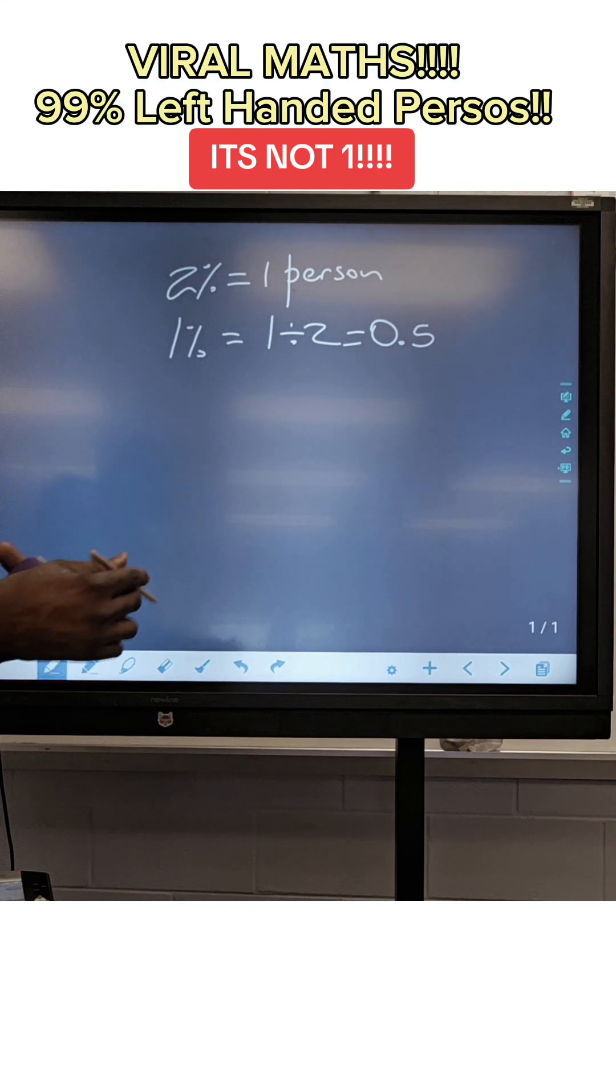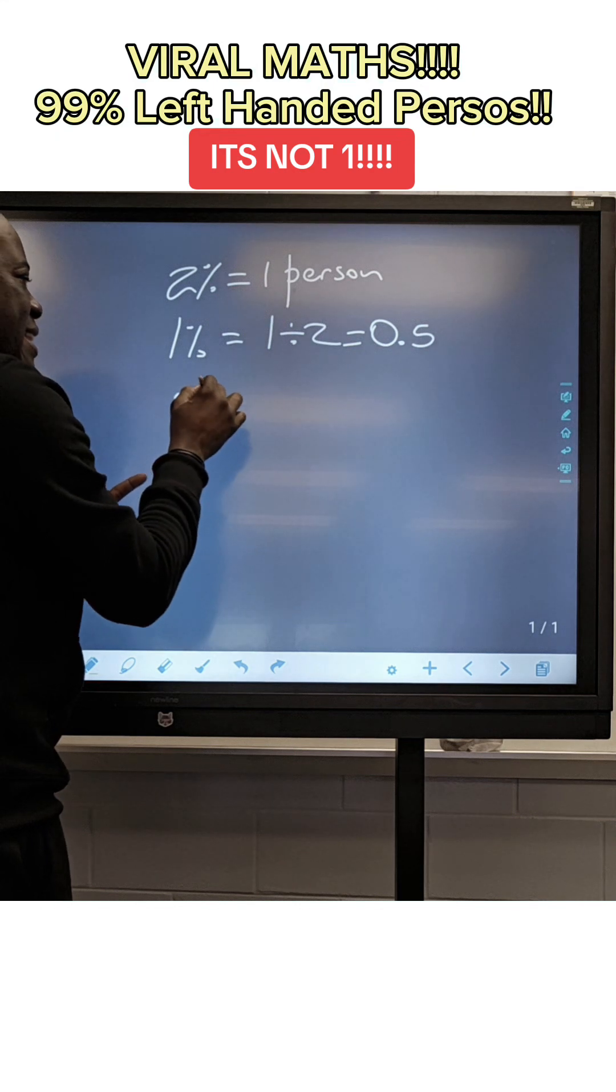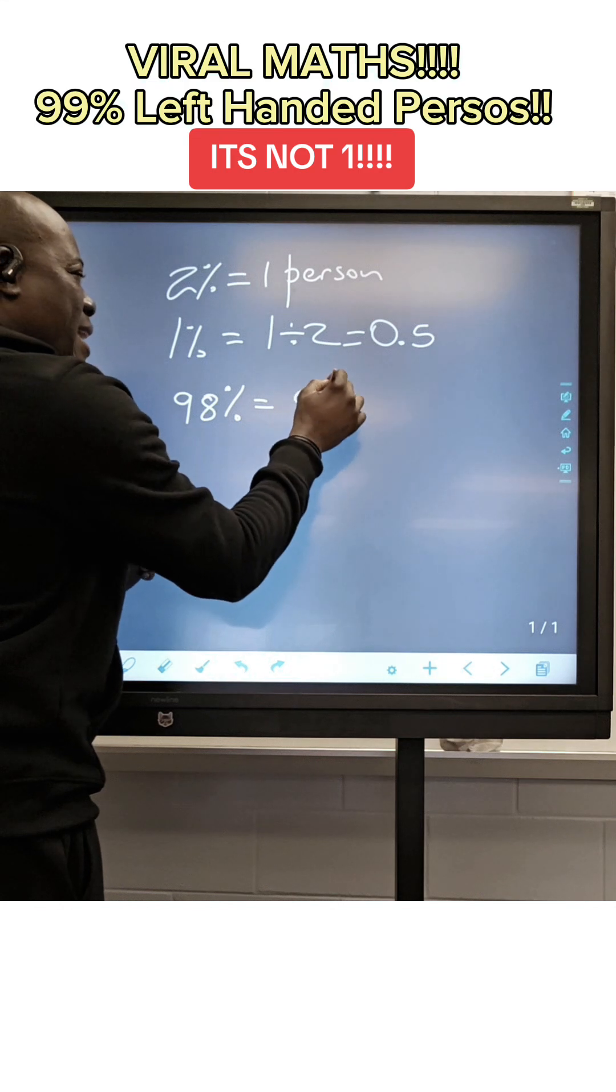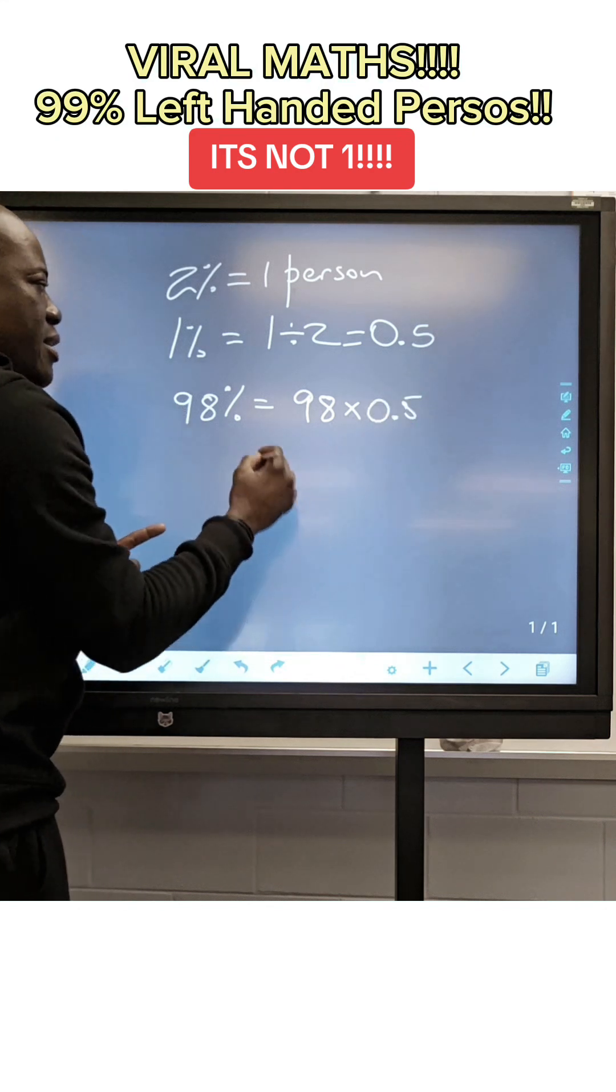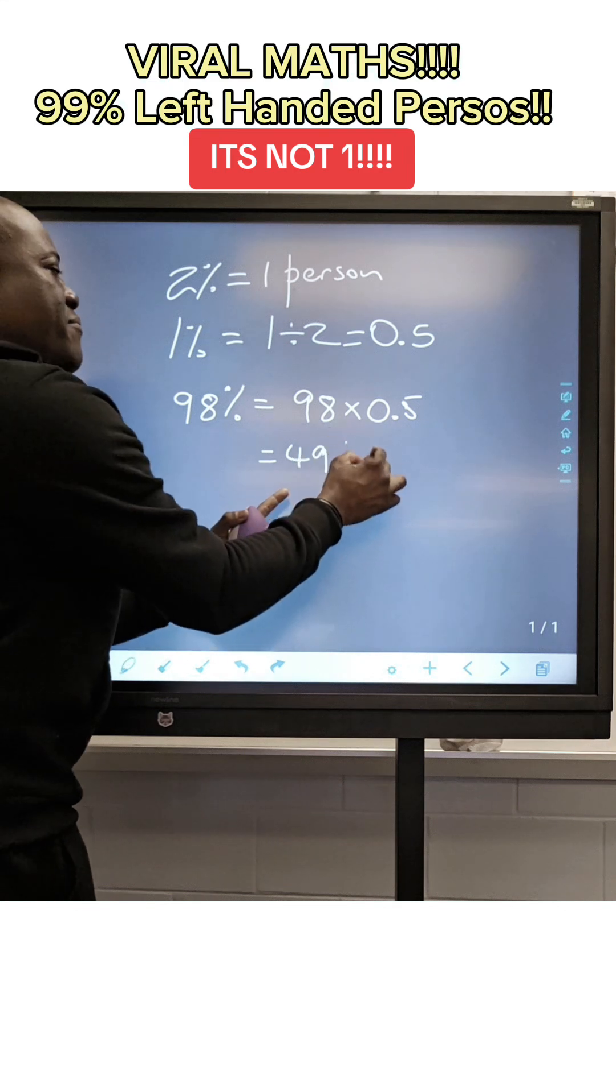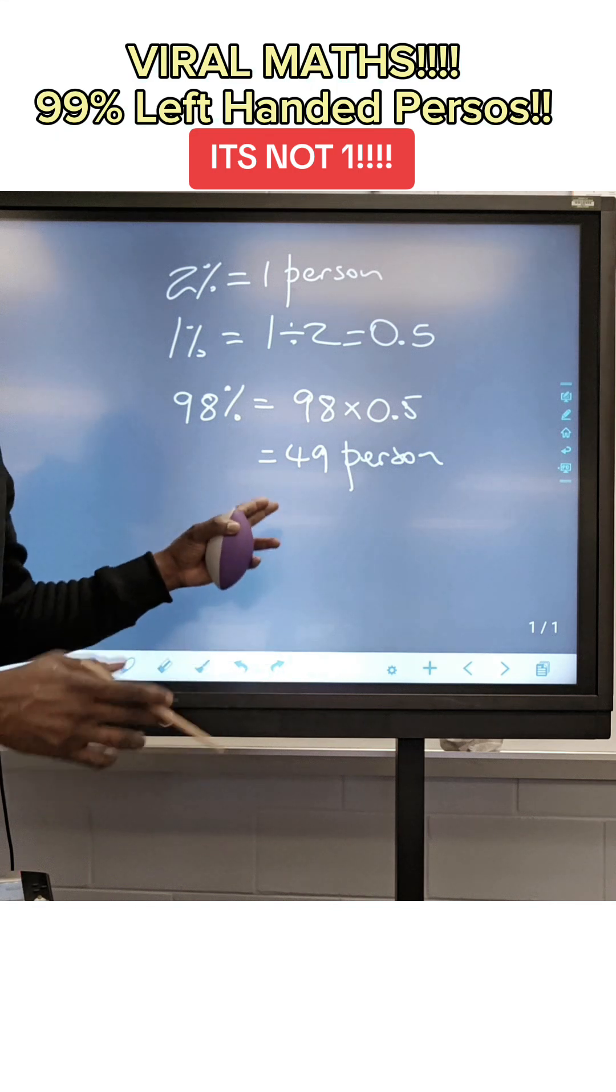So what is 98%? If 1% is 0.5, 98% is to take 98 and times it by 0.5. That's going to give you 49. What this means is that 49 persons would have represented 98% in this context.